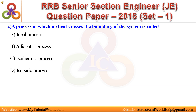Question 2: A process in which no heat crosses the boundary of the system is called — A. Ideal process, B. Adiabatic process, C. Isothermal process, D. Isobaric process. Answer is: Adiabatic process.